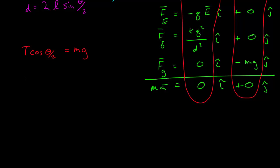And in the x direction, we have T sine theta minus charge times the electric field, the magnitude of the field, plus kq squared over the distance between them squared, which is 2L sine theta over 2 all squared, and this is equal to zero.